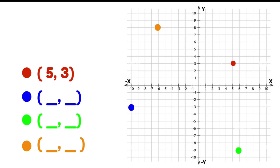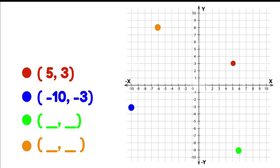Let's look at the blue dot and see where that's sitting. On the x-axis it's at minus 10, or negative 10, and on the y-axis it's at negative 3. So our ordered pair would be negative 10 and negative 3. For our green dot, looking at where it sits on the x-axis it's at 6, and on the y-axis it's at negative 9. So our ordered pair is 6 and negative 9.